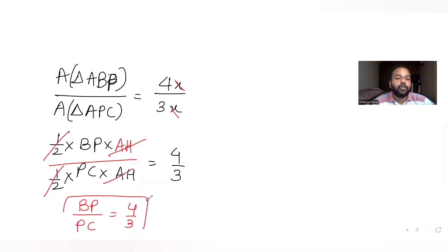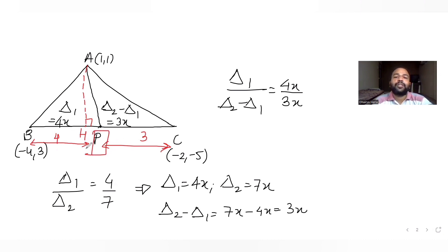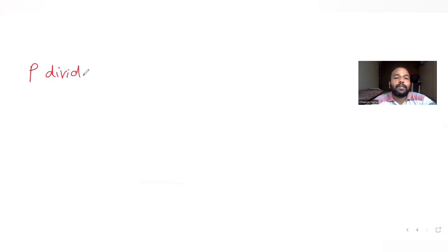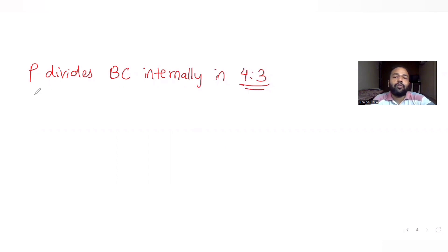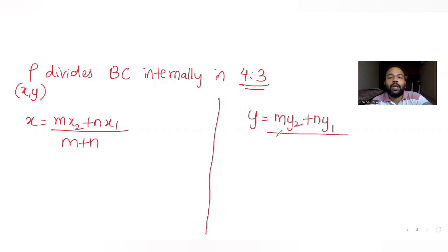So BC is divided in the ratio 4:3. Once I have the ratio, I can find the coordinates of P using the section formula. P divides BC internally in the ratio 4:3. Using the section formula: x = (m·x₂ + n·x₁)/(m+n) and y = (m·y₂ + n·y₁)/(m+n), where m = 4 and n = 3.